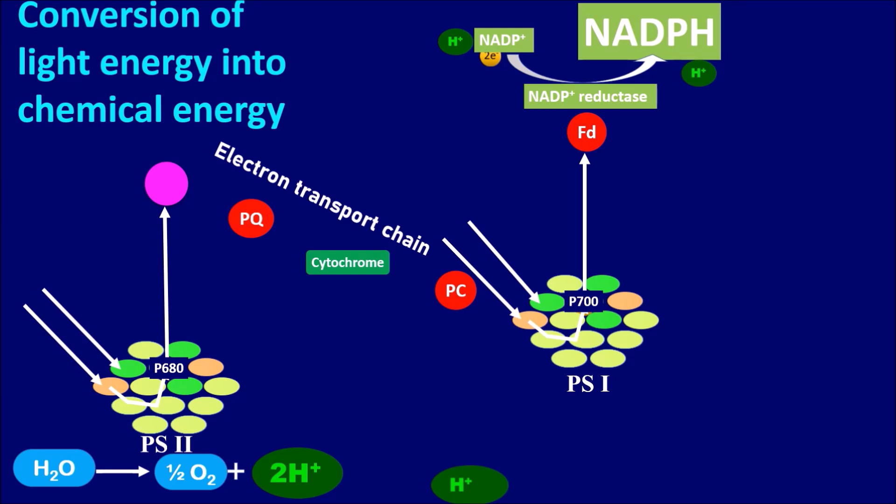and utilized in the dark phase or Calvin cycle. The protons which are formed during the photolysis and during the electron transportation will be transferred through the ATP synthase complex. Which results in combining inorganic phosphate with the adenosine diphosphate to form ATP, adenosine triphosphate